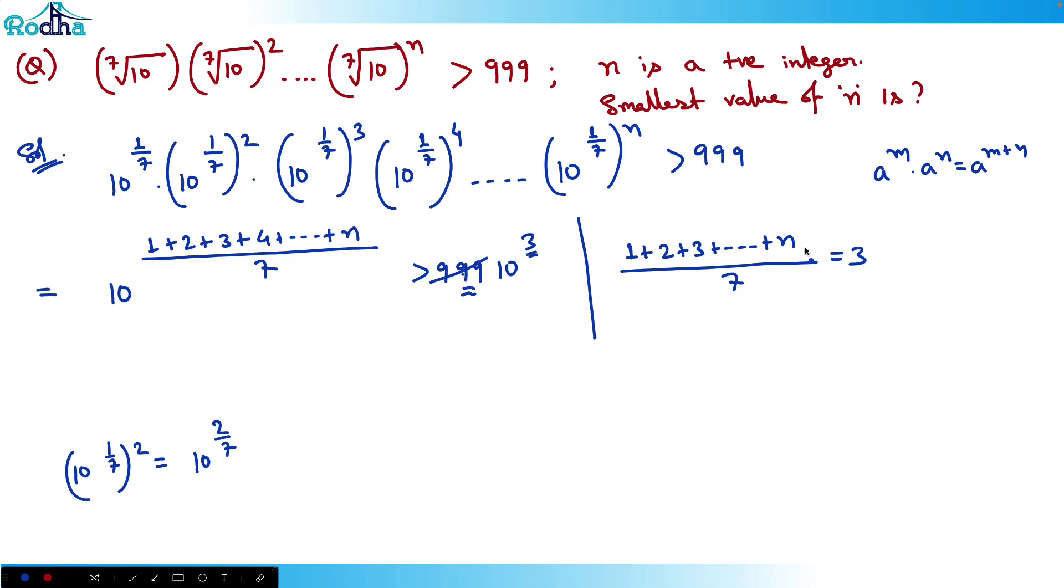If I go to further values, this value of n will be more, but I want the smallest value of n, so I should take the smallest value on the right side, which is equal to 3.